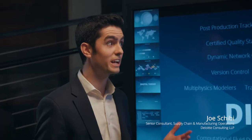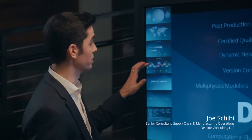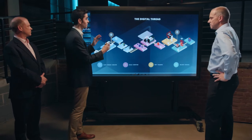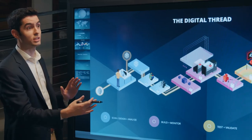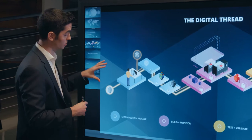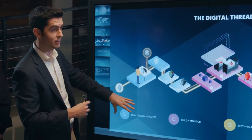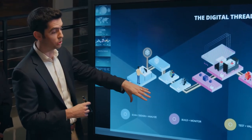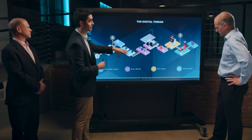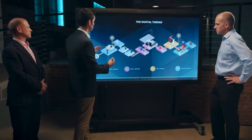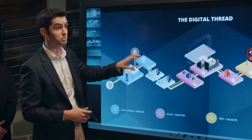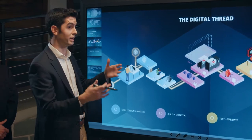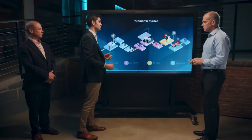Yeah, so a lot of words on this screen. What we like to do is jump into a simple graphic of how to visualize this. This is our standard digital thread graphic across four distinct phases: scan, design, and analyze; build and monitor; test and validate; and deliver and manage. In the scan, design, and analyze phase, there's design work, but also computer-aided engineering work to look at how we improve the design in the next iteration.